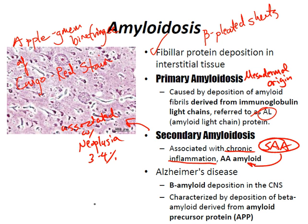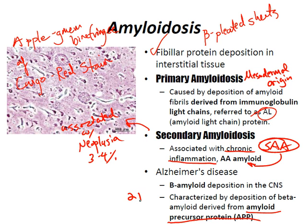In Alzheimer's disease, you get beta-amyloid deposition in the central nervous system. It's characterized by deposition of beta-amyloid derived from APP — amyloid precursor protein. The gene that codes for beta-amyloid is on chromosome 21, which helps explain why patients with Down syndrome, trisomy 21, have an increased frequency of early-onset Alzheimer's.